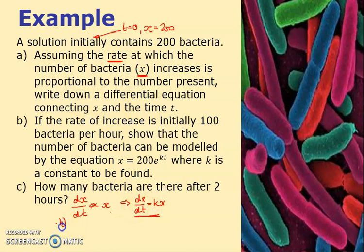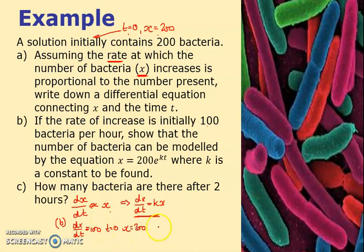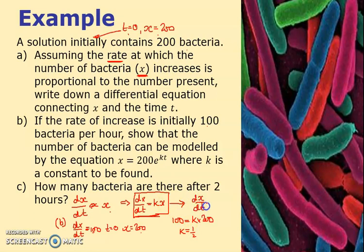Part b says the rate of increase is initially 100, so dx/dt equals 100 when t equals 0. We already know that when t equals 0, x equals 200. I can substitute into the equation: 100 equals k times 200, so k equals one half.